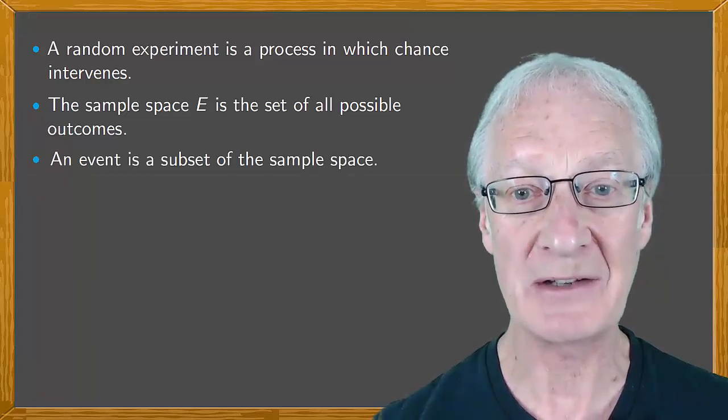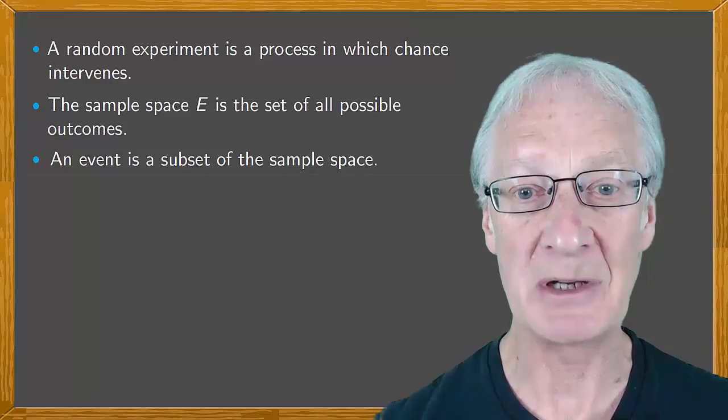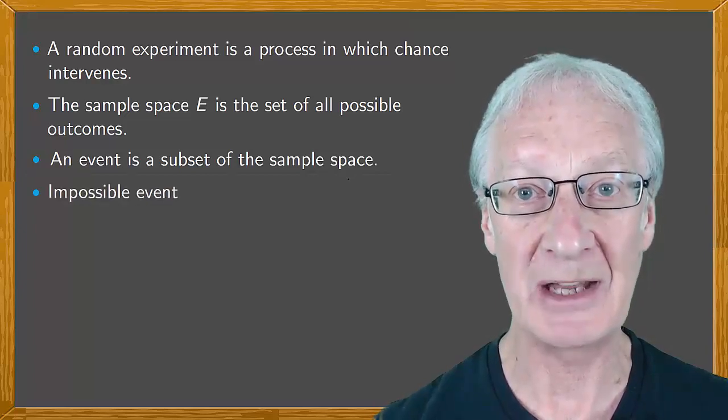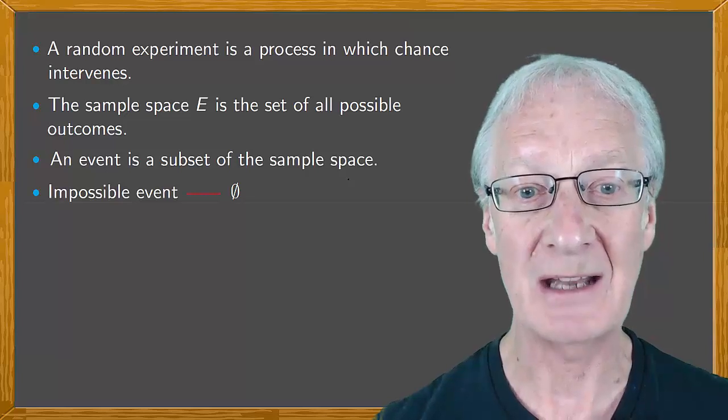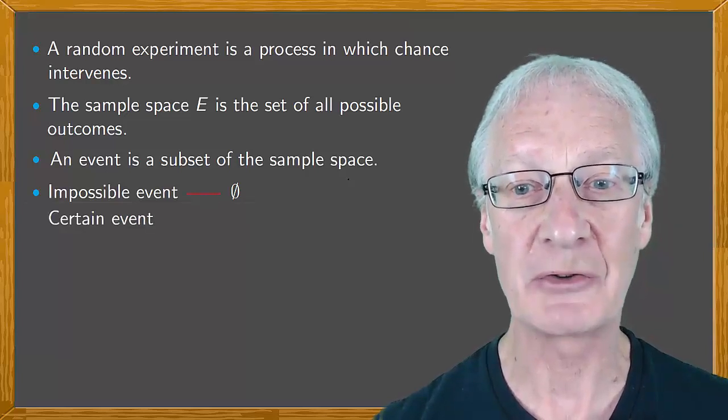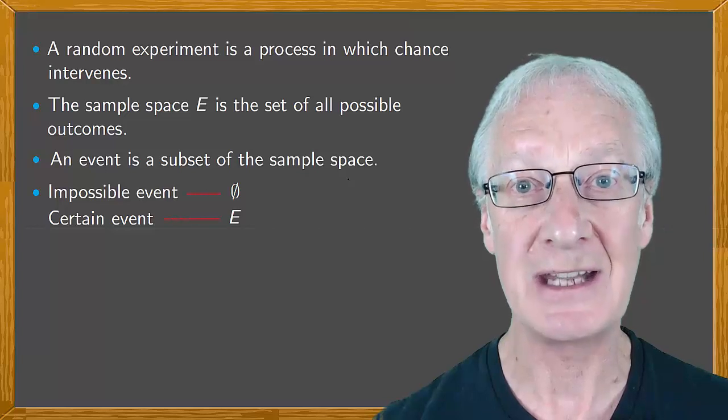Two special types of events in a random experiment are the impossible event, which corresponds to the empty set, and the certain event, which corresponds to the total set E.